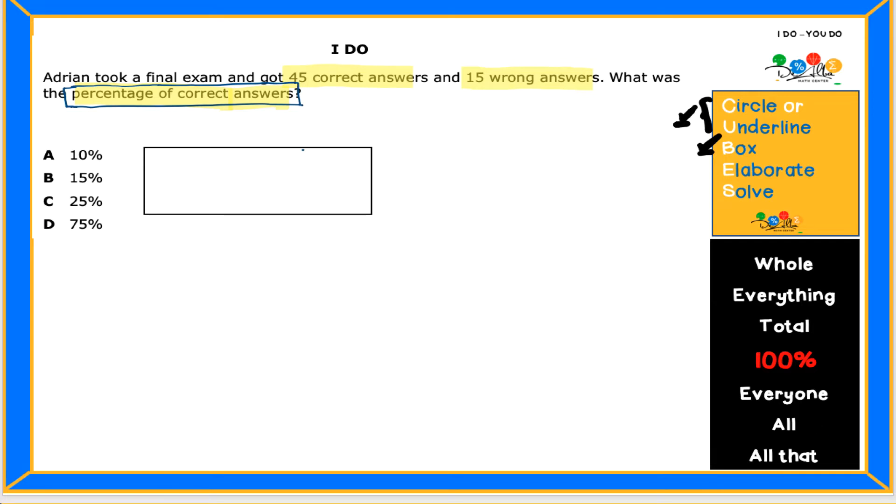I'm going to say we have 45 questions and these are correct questions. What is the other type of questions that we can have? Exactly. Wrong questions. And the wrong questions are how many? 15. Great. I'm just going to highlight those two numbers so we can see them better.